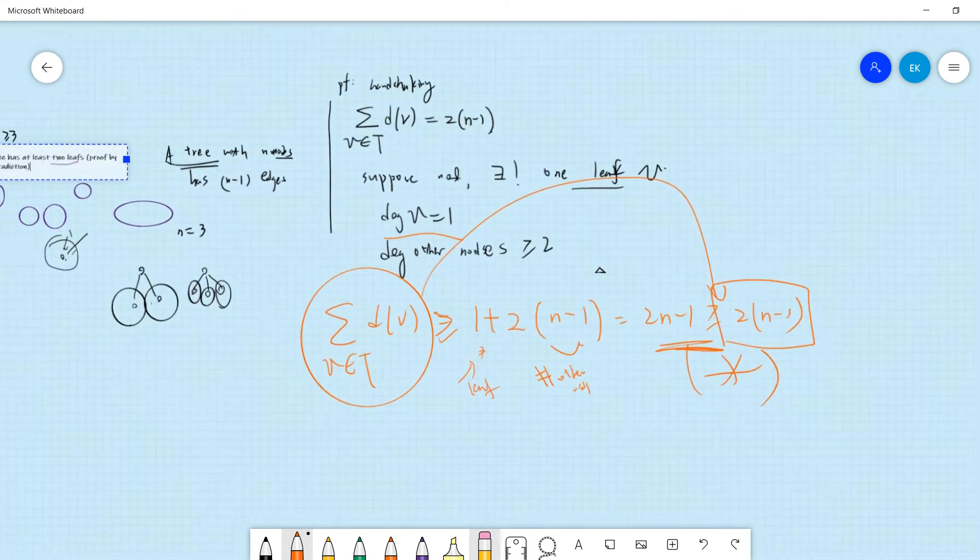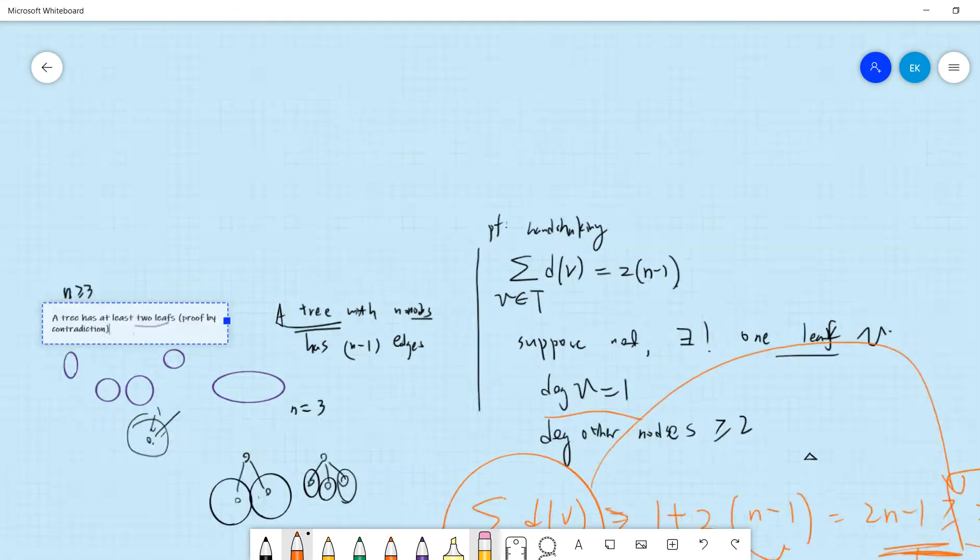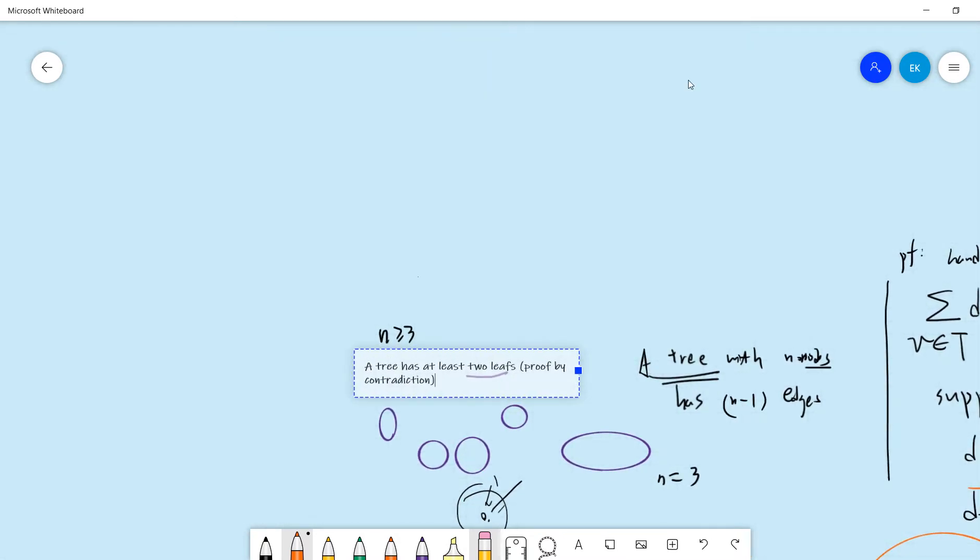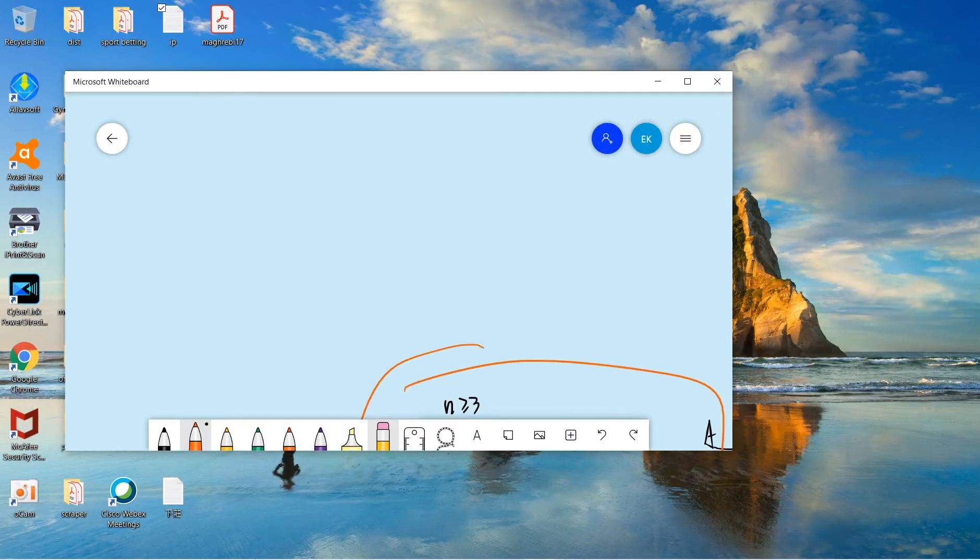So contradiction. So we have proved this simple fact that when n is greater or equal to three, a tree has at least two leaves. I will see you guys in another interesting graph theory video. Be sure to subscribe to my channel. Thanks.